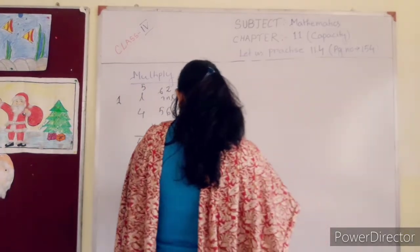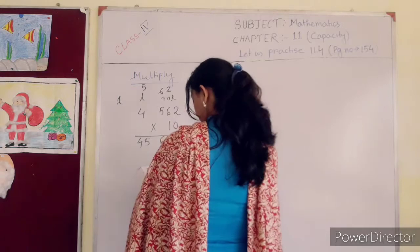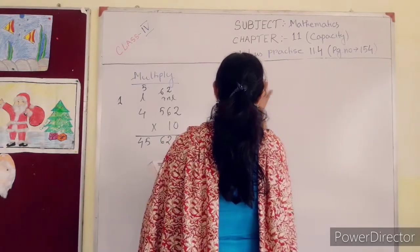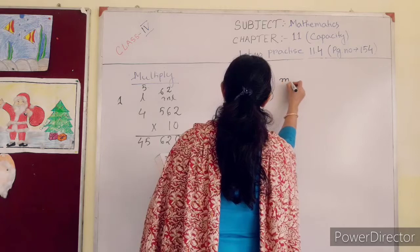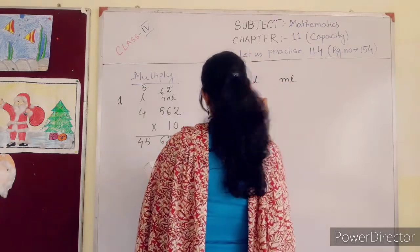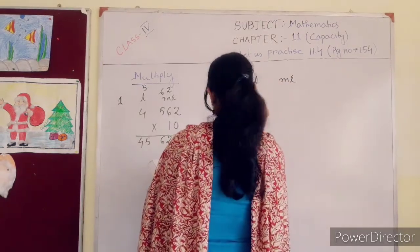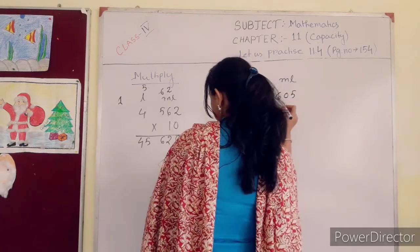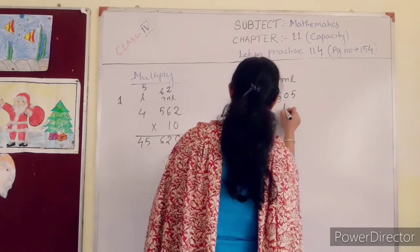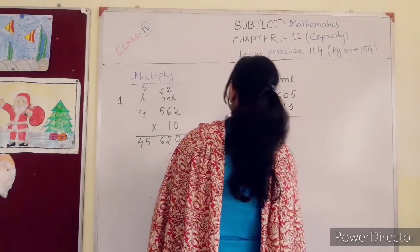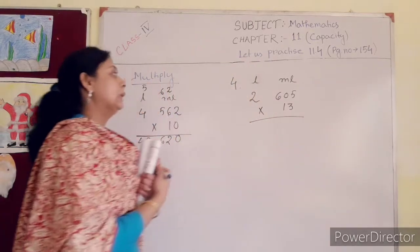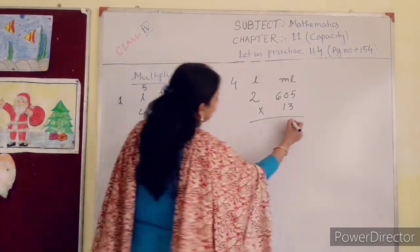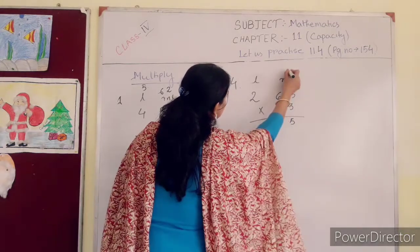Now number 4. Liter, milliliter. 2 liter, 605 milliliter. Multiply it by 13. Now multiply the number. 13 into 5 is 65. 5 is in your hand, 6 is in your hand.